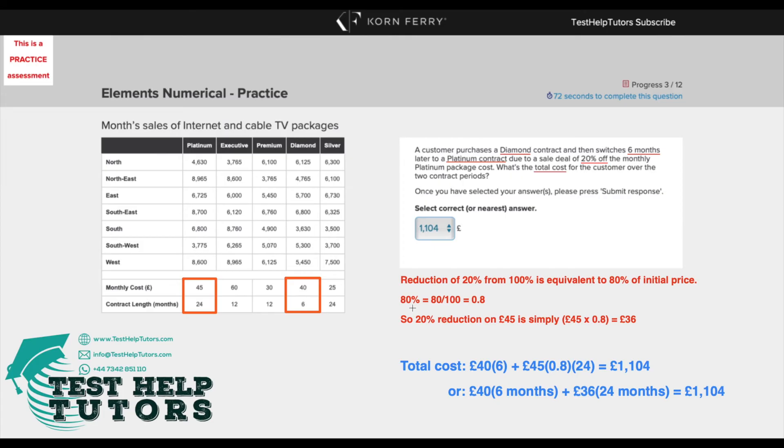80% is the same as 80 over 100 as a fraction, which is equivalent to 0.8. So essentially a 20% reduction on £45 is simply £45 times 0.8, which is £36.